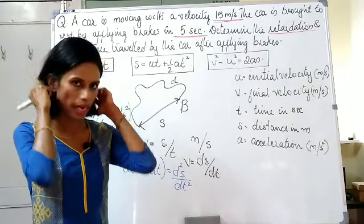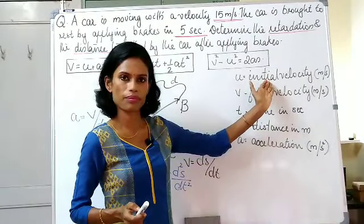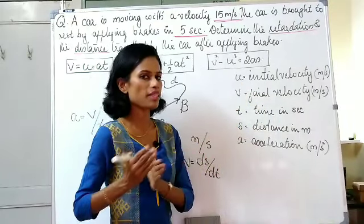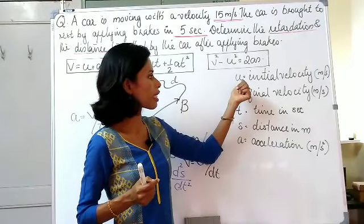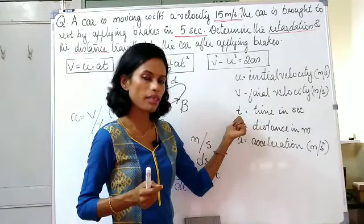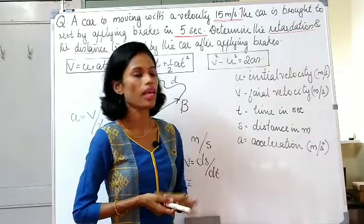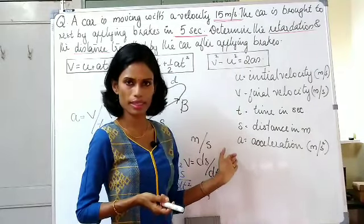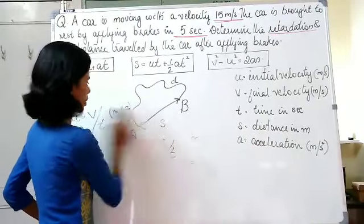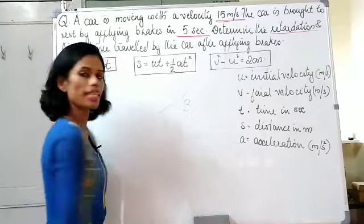There are certain notations which are important. Initial velocity is represented by U — for example, when a train starts from a station, its velocity is the initial velocity U. Final velocity is represented by V. T is the time taken, S is the distance or displacement, and A is acceleration. These are the notations in linear motion, and there are certain fundamental equations which you have to know.